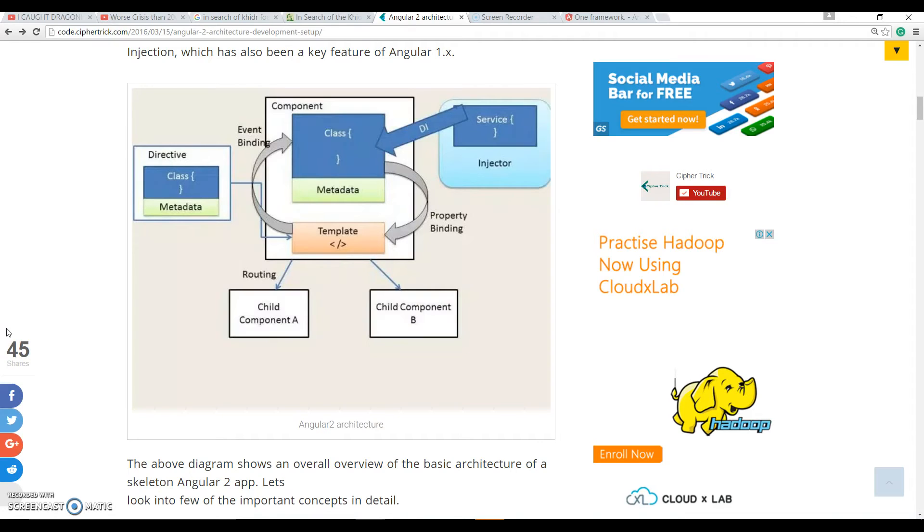And also we have event bindings and property bindings. These are the two types of bindings we have. We do not have out-of-the-box two-way data binding, but the Angular team has given us a directive using which we can do two-way data binding as well. It is just a combination of event and property binding.